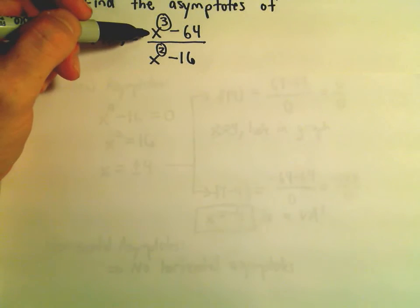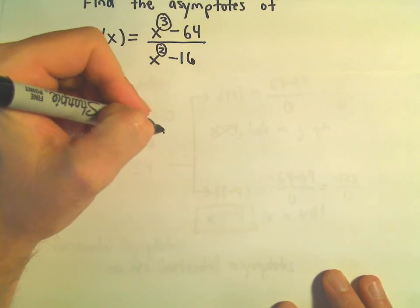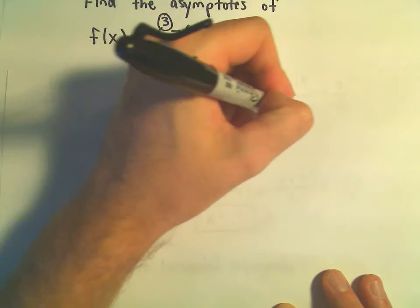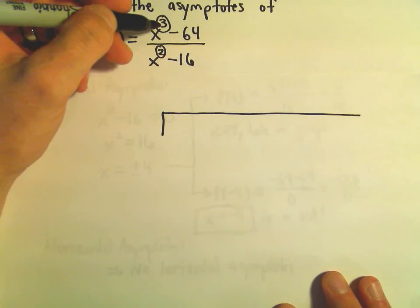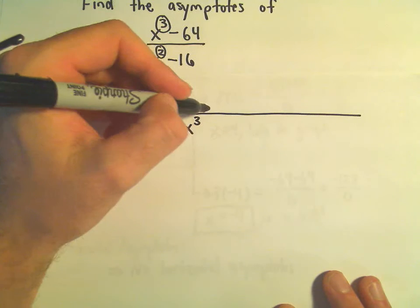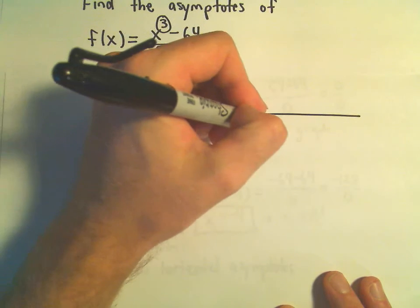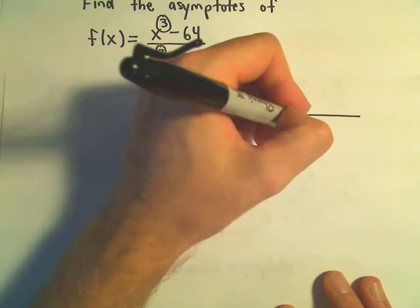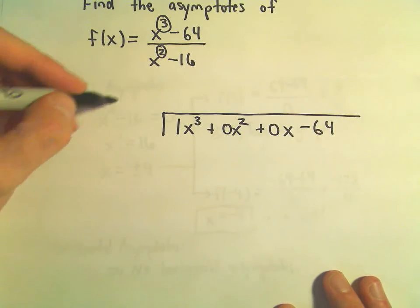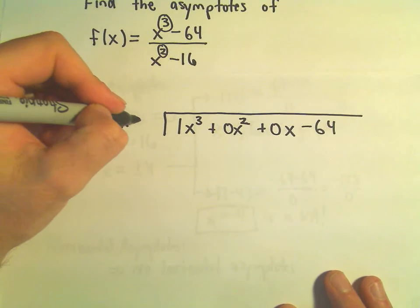Okay, so we could start trying to factor and cancel to reduce this a little bit. I'm just going to do long division on it the way it is. Notice we could write the numerator as 1x cubed plus 0x squared plus 0x minus 64. We're dividing by x squared. I'm going to fill in 0x minus 16.